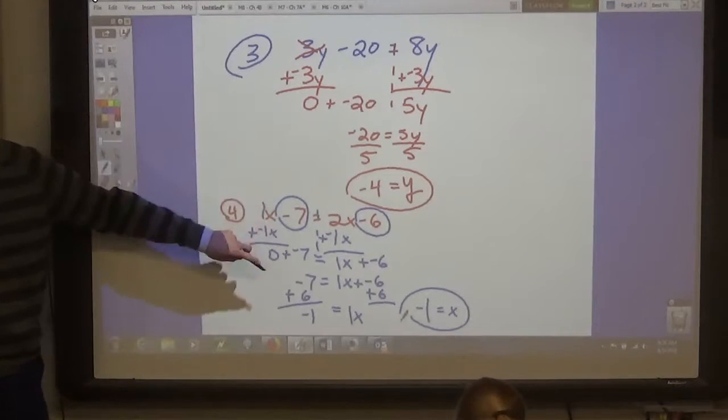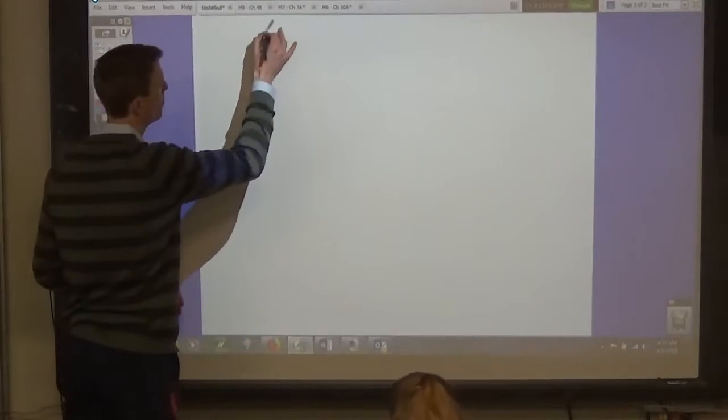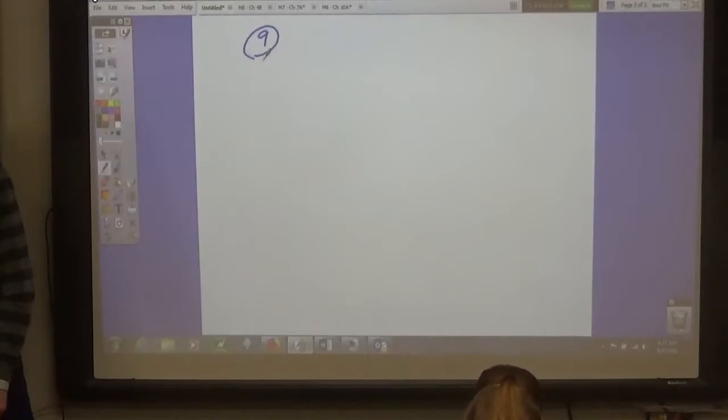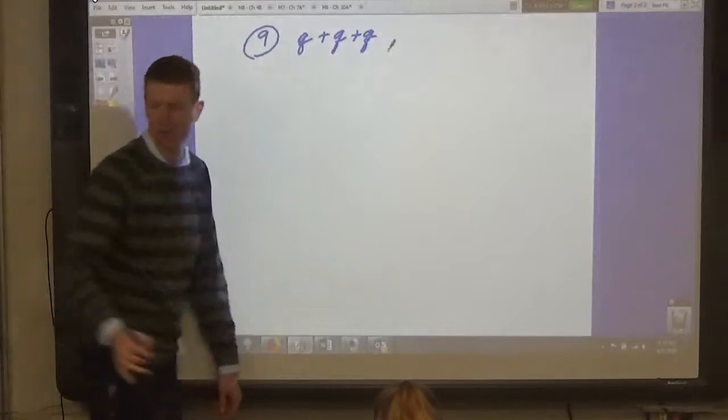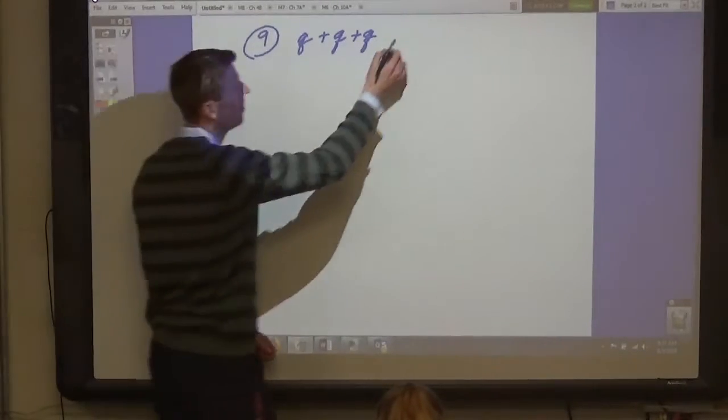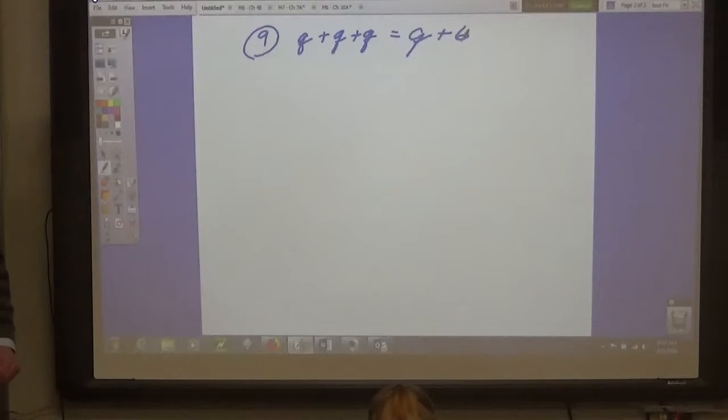Okay. Any questions on these? All right. We need to skip down to number, let's see, number 9. Number 9 is written differently. Q plus Q plus Q equals Q plus 6. What? What? My voice. What is that? What is that? I get it. Huh. Oh, I get it. Well.